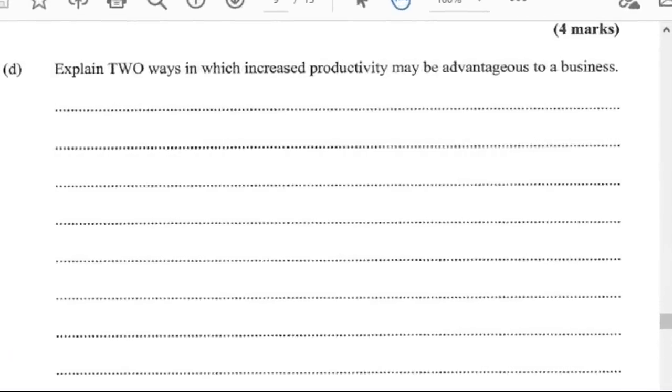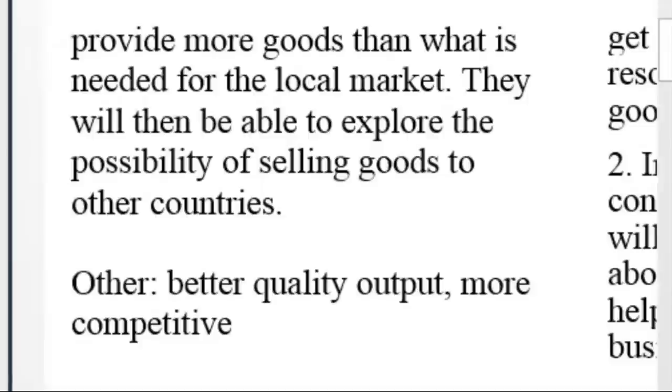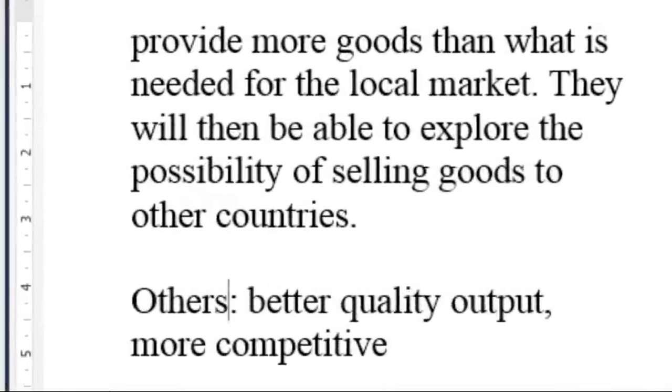D says explain two ways in which increased productivity may be advantageous to a business. First, greater profit for the business. When the business is very productive, it may be able to increase its level of output, resulting in more sales and more profit. Second, greater opportunity for export. With increased output, the business is in a position to provide more goods than what is needed for the local market. They will then be able to explore the possibility of selling goods to other countries. Other ways include produce better quality output and become more competitive.